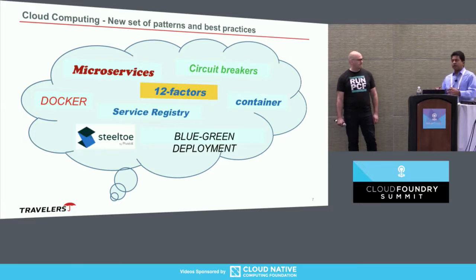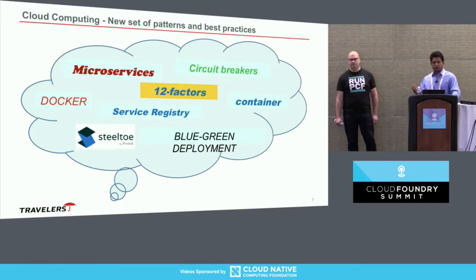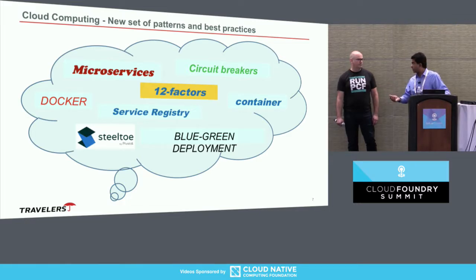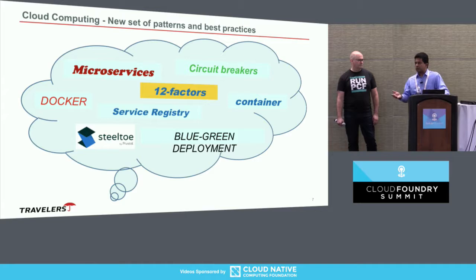If you take greenfield applications, new patterns like microservices, circuit breakers, and blue-green deployment are fairly easy to learn — you can Google it, go to GitHub, and build it fairly easily. Products like Steeltoe give a great level of abstraction so you can grow into features like circuit breakers or service registries. But again, the elephant in the room really is the existing .NET — the brownfield applications.